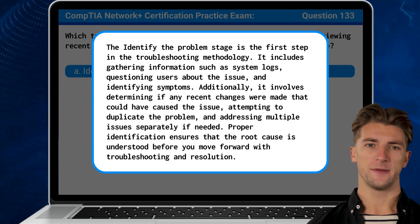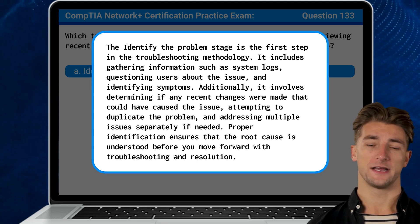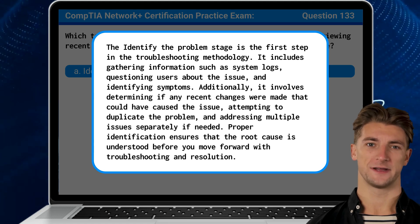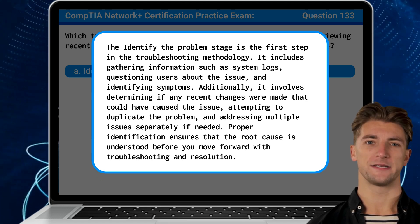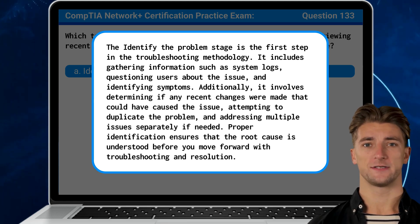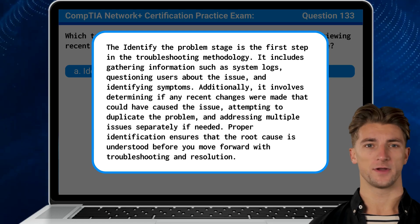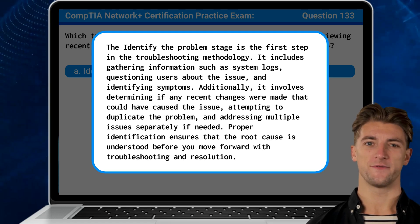The identify the problem stage is the first step in the troubleshooting methodology. It includes gathering information such as system logs, questioning users about the issue, and identifying symptoms. Additionally, it involves determining if any recent changes were made that could have caused the issue, attempting to duplicate the problem, and addressing multiple issues separately if needed. Proper identification ensures that the root cause is understood before moving forward with troubleshooting and resolution.